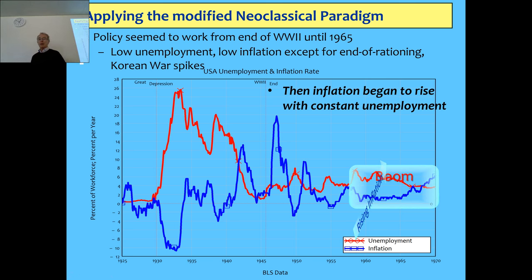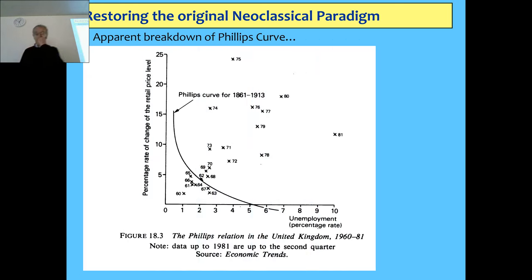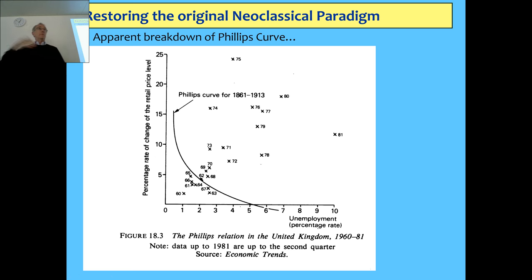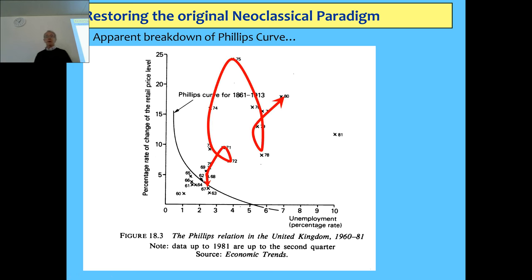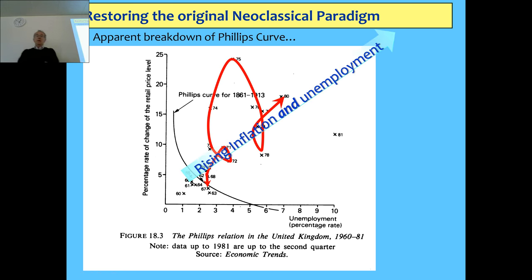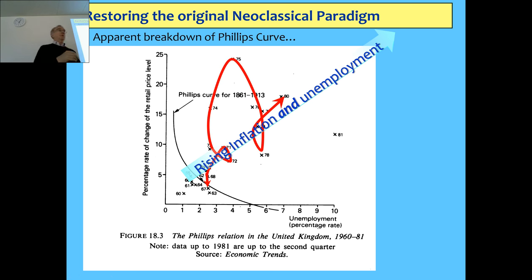But then inflation began to rise, with the inflation rate getting higher and unemployment falling — consistent with the Phillips menu approach. There was a boom going on but with rising inflation. Then after a while you had rising inflation and rising unemployment together — stagflation — which was seen as contradicting the Phillips curve, in the same way that falling wages and rising unemployment had contradicted the neoclassical vision during the Great Depression. This was a new dilemma for people who saw themselves as Keynesian.